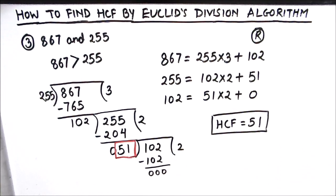This is how you can use Euclid's division algorithm for finding the HCF of large numbers. I hope this video is helpful to you. If you like the video, please hit the like button and subscribe to my channel for more math videos. Thanks for watching.